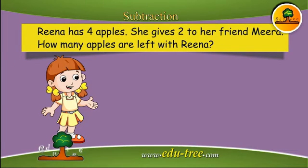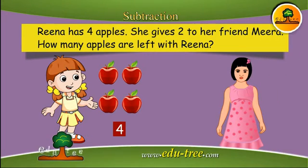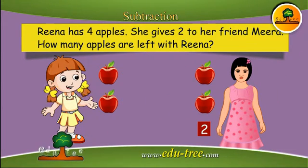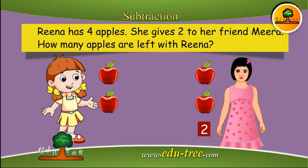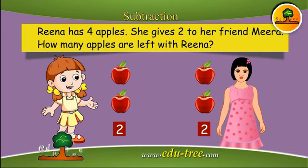Let us try to solve some more examples. Reena has four apples and she gives two to her friend Mira. How many apples are left with Reena? This is an example of take away subtraction. Four minus two is equal to two.